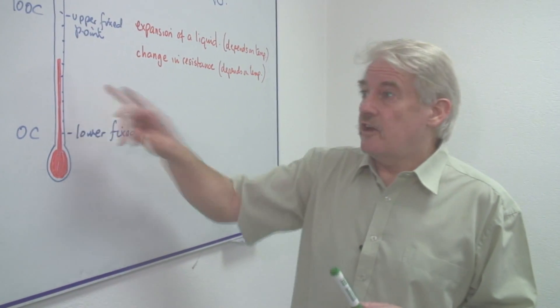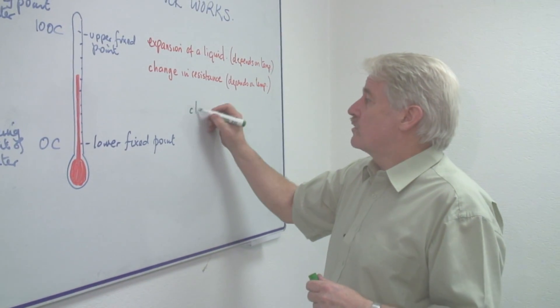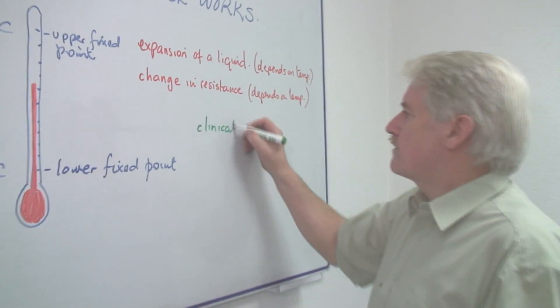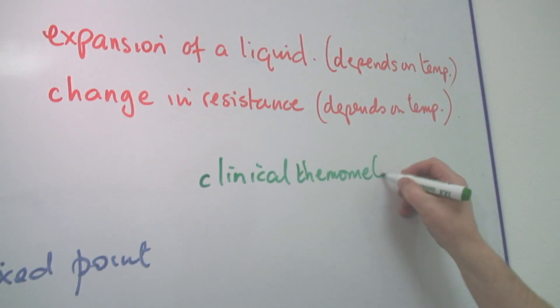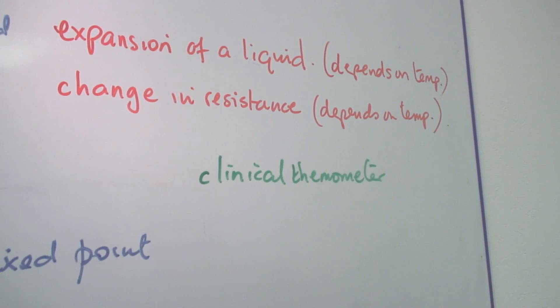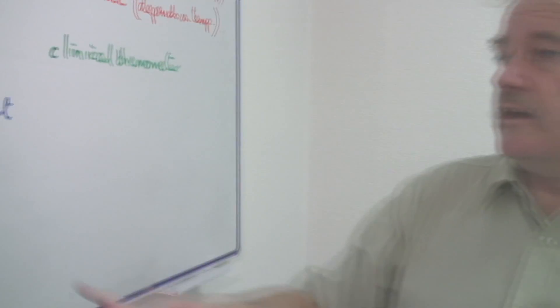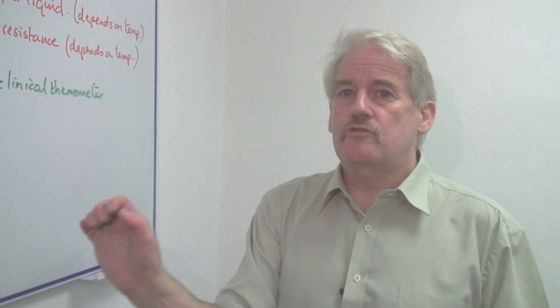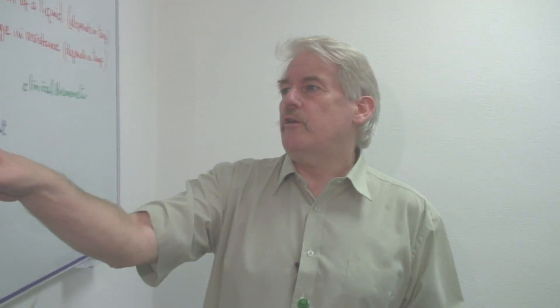But of course, not only that, there are things called clinical thermometers. Now a clinical thermometer is slightly different. It's basically the same in construction, but at the bottom it has a small constriction. It has a small piece where it goes very narrow in this tube.